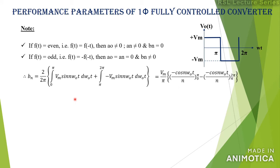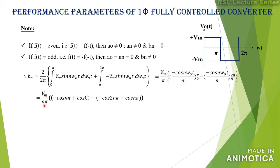The 2s cancel and taking Vm outside we can write Vm/π. Integrating the first term, integral of sin(nω₀t) gives −cos(nω₀t)/n over the limit 0 to π. Similarly, integration of sin(nω₀t) for the second term gives −cos(nω₀t)/n over the limits π to 2π. Substituting the limits and taking n in the denominator outside, we get (Vm/nπ) times [−cos(nπ) − (−cos 0)] minus [−cos(2nπ) − (−cos(nπ))], and we already know that cos 0 and cos(2π) equal 1.